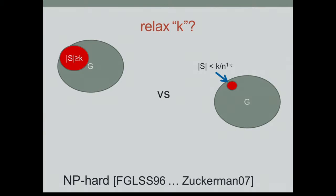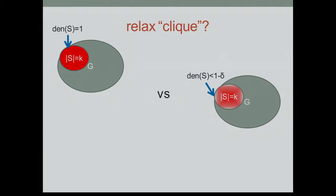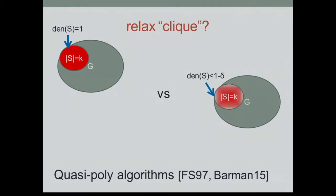For a lot of applications, a more natural relaxation is to relax the clique itself. Both subgraphs will be of size k, but instead of requiring an actual clique, we just want something with high density — so 1 minus delta for some constant delta. As far as I know, zero hardness results were known about this, but there are algorithms. There are a few algorithms that run in quasi-polynomial time, and this second one is sort of related to the last talk we saw.